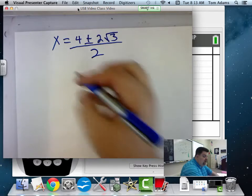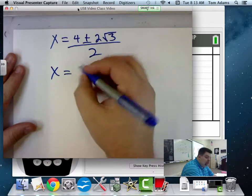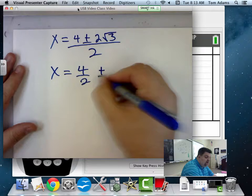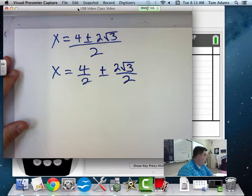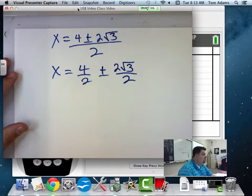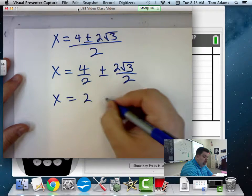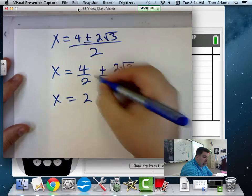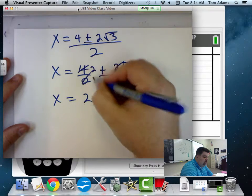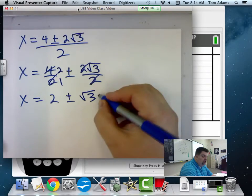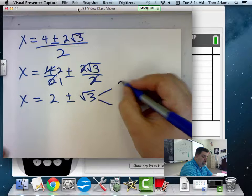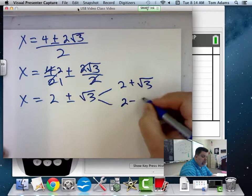Now, wait a minute. Can I do this? Can I say x is equal to 4 over 2 plus or minus 2 root 3 over 2? Can I do that? I won't move forward until I see everybody's head nodding. Yes, okay. So now then x is equal to 2 plus or minus, because this cancels and then this reduces to 2 over 1, root 3, right? Which is 2 plus root 3 or 2 minus root 3?